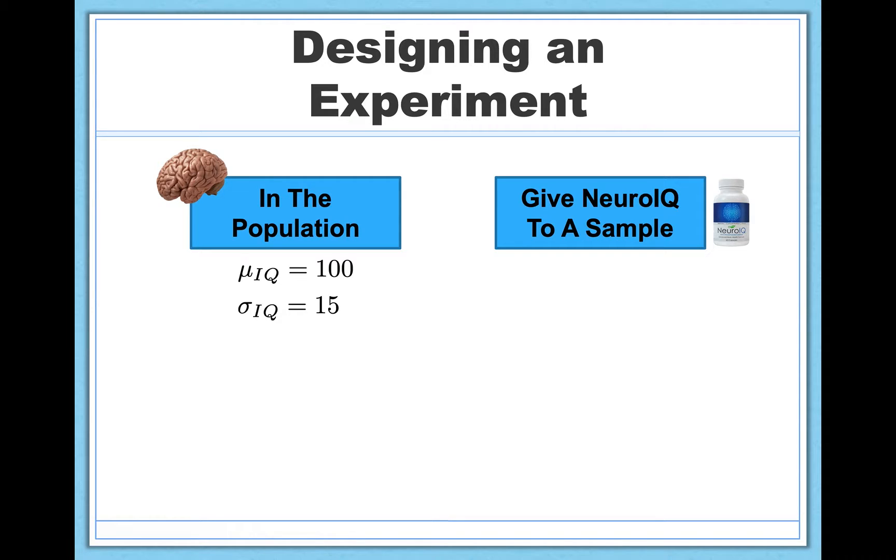So let's say I did this study and I kept it reasonable. I just collected 15 participants. I gave them NeuroIQ for 30 days, and then I measured their IQ at the end of that 30-day period. And here's the data I collected.